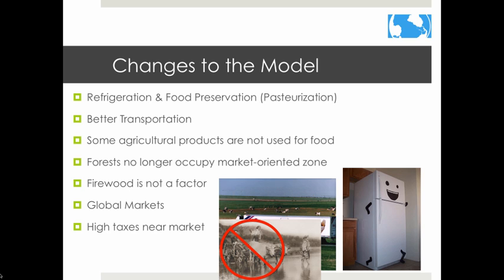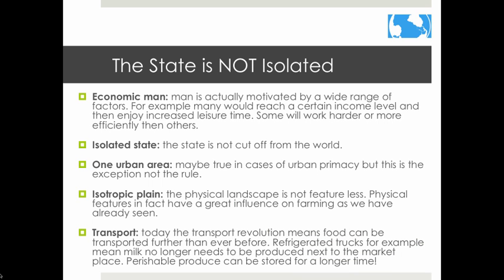Many changes since Von Thünen's time have affected what the model looks like today. Changes include refrigeration, food preservation including pasteurization of milk, and better transportation. Some agricultural products are no longer used for food. Forests do not occupy the market zone because firewood is no longer used for fuel, and suburbs have replaced much of this land. Farmers are now growing food for global markets instead of local markets, making the model harder to apply.